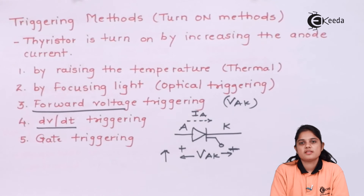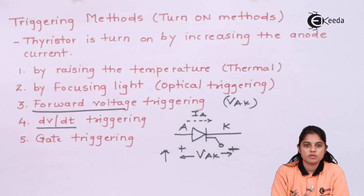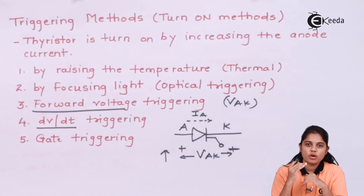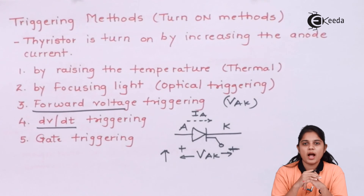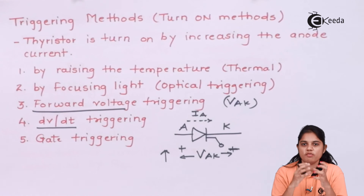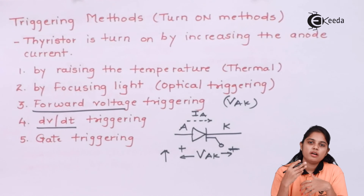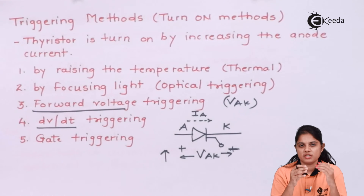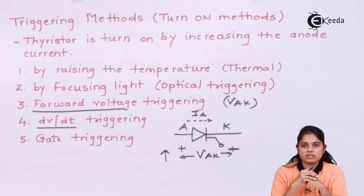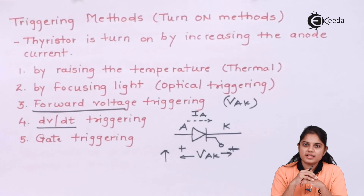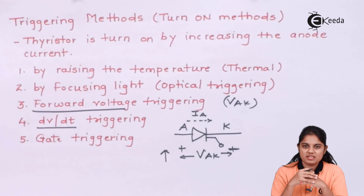Gate triggering is the most important and most commonly used method to turn on the SCR. Gate triggering also has different types, which we will see in the upcoming video. All four previous methods — thermal, optical, forward voltage, and dV/dt triggering — can be used to turn on the SCR, but they each have disadvantages. Therefore, gate triggering is always the preferred method to trigger the SCR on. In the next video, let's see what types of gate triggering exist and how this method can be implemented to turn on the SCR easily.